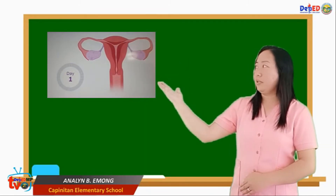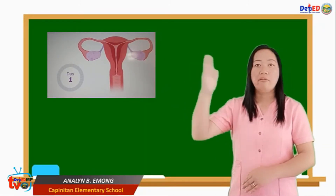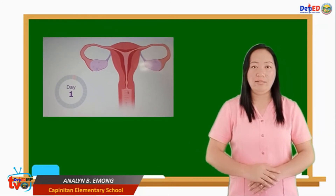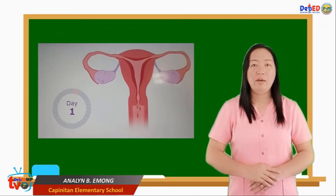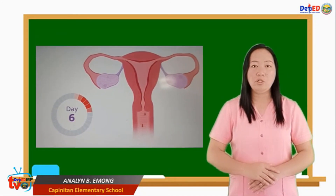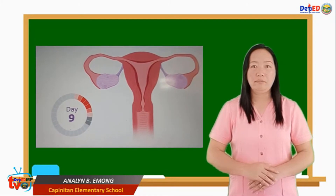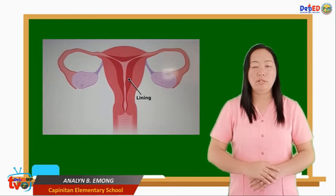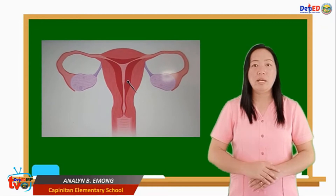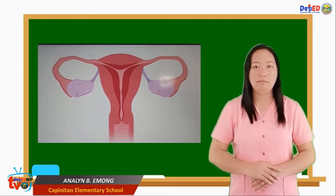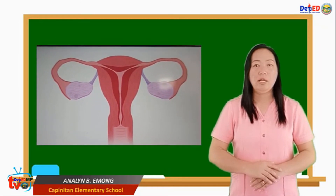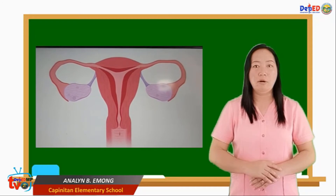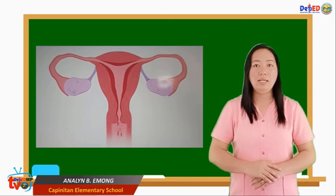Phase 1 is the menstruation phase. This occurs when fertilization does not occur. The first day of menstruation is the first day of the menstrual cycle. The uterus lining breaks down and blood comes out of the vagina.